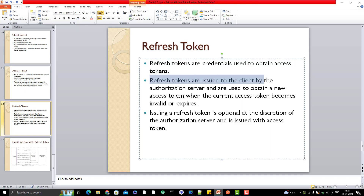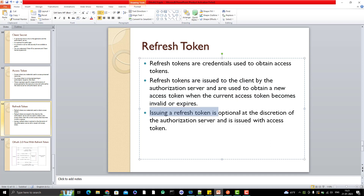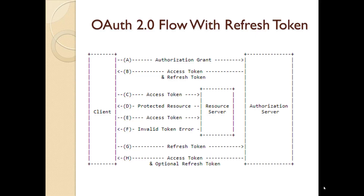Refresh tokens are issued to the client by the authorization server and are used to obtain a new access token when the current one becomes invalid or expires. Issuing a refresh token is optional, at the discretion of the authorization server, and it is issued alongside the access token. If you want clients to re-request authorization once the access token expires, you can choose not to issue a refresh token. Now let me explain the OAuth 2.0 flow with the refresh token.